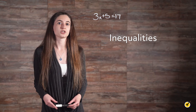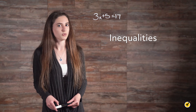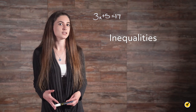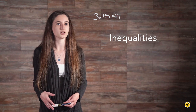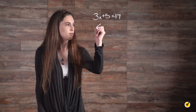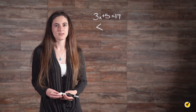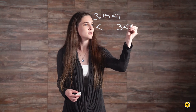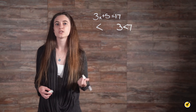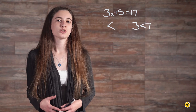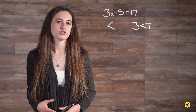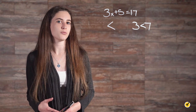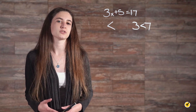Inequalities portray expressions that are generally not equal. There are four symbols that allow us to indicate that expressions are larger or smaller than each other. This symbol means less than. For example, this means 3 is less than 7. A trick to remembering which side is larger or smaller is that the side of the symbol with the point is smaller than the open side, which appears to be larger.